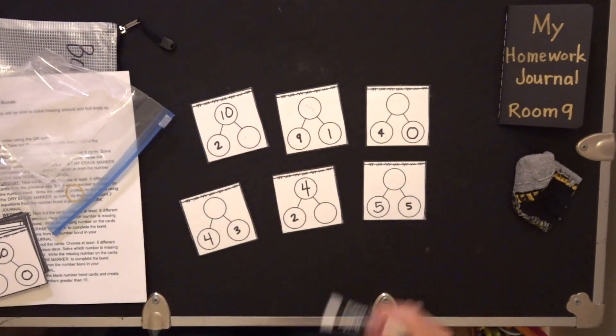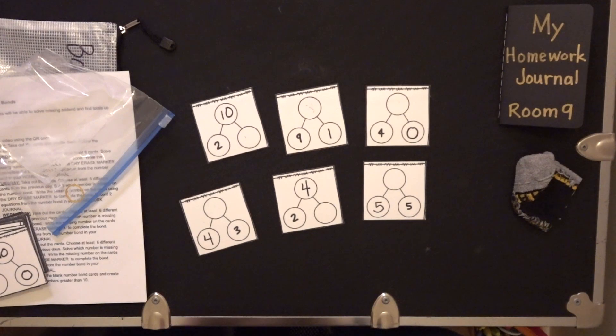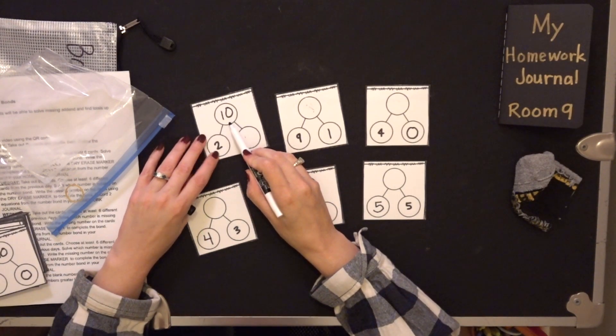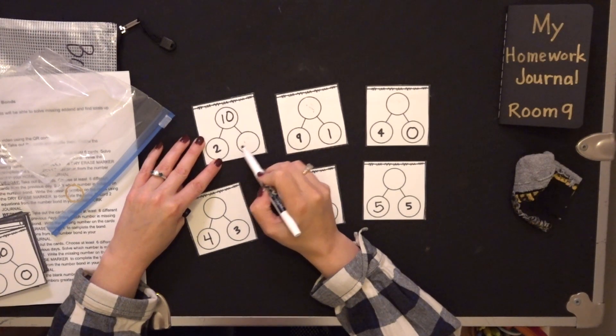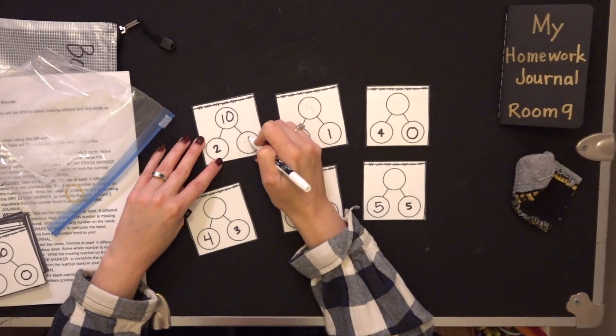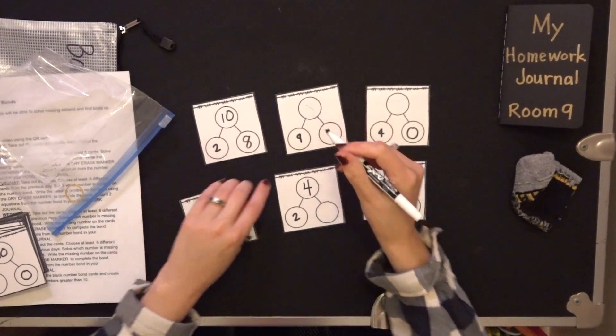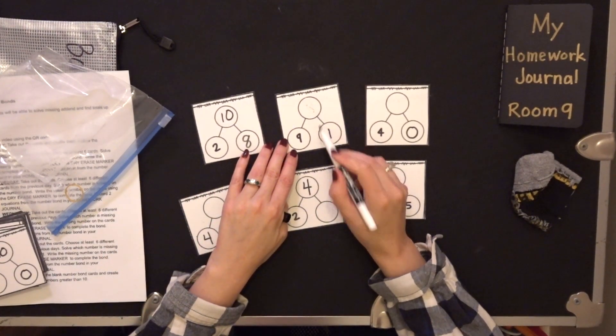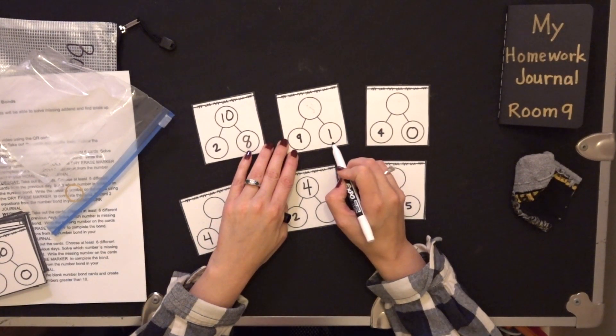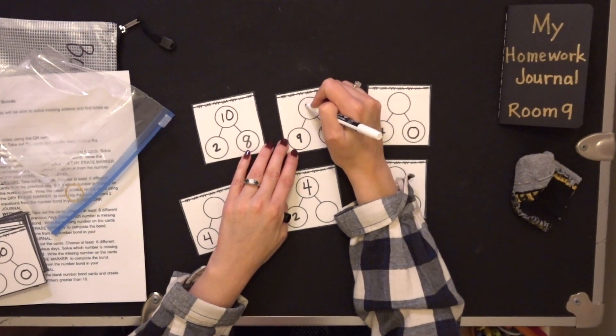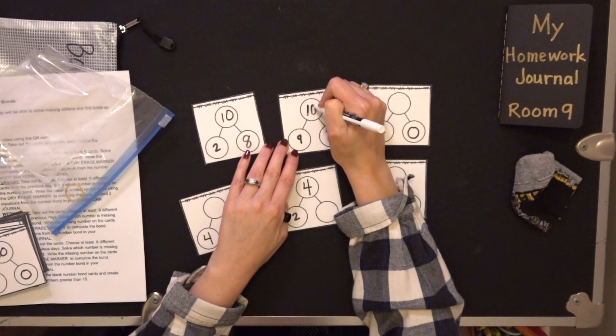You're going to use your dry erase marker and you're going to solve. Let's see. Ten is my whole, my part is two. So that means my other part has to be eight. This one I have the parts but not the whole. I have nine and one. That means my whole is ten.